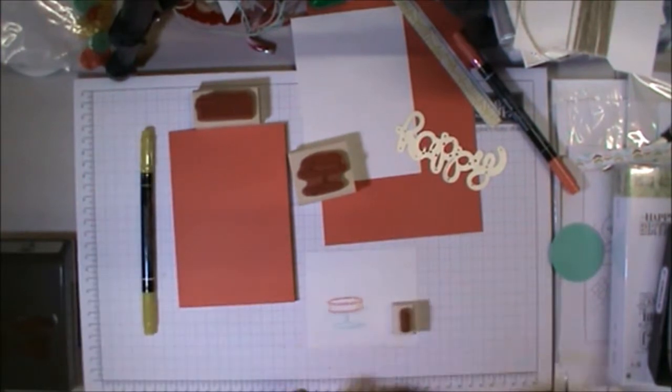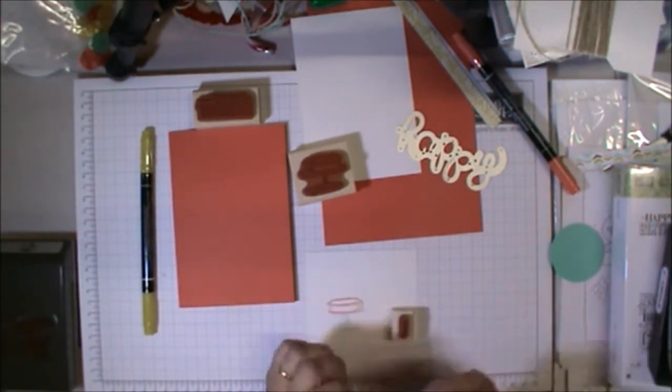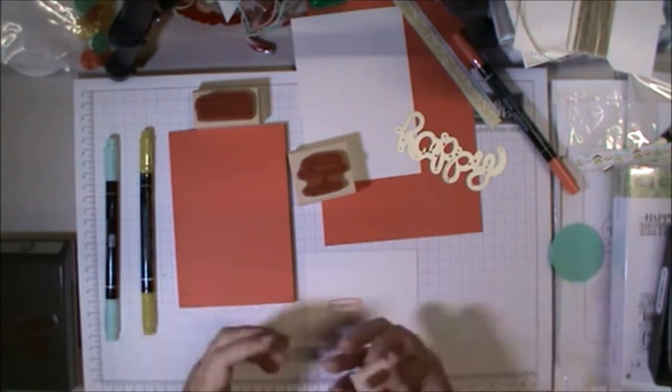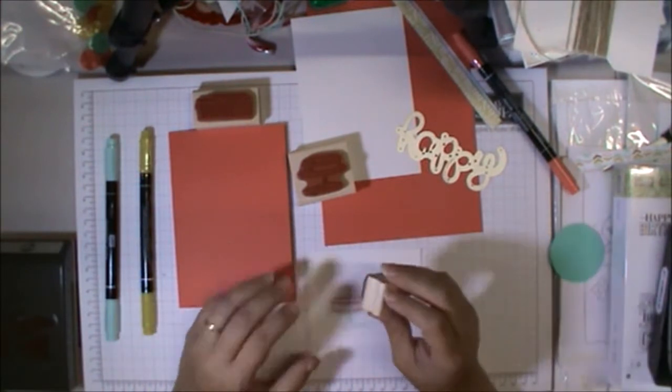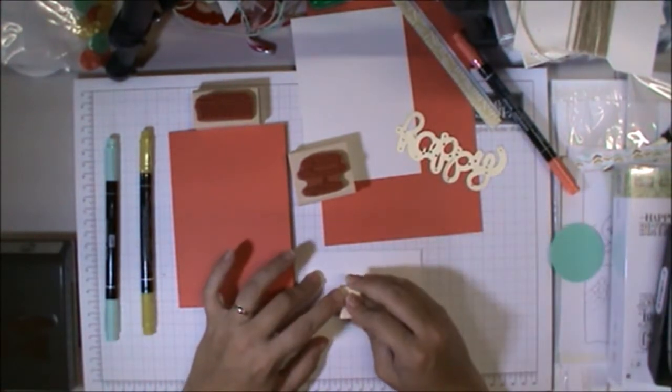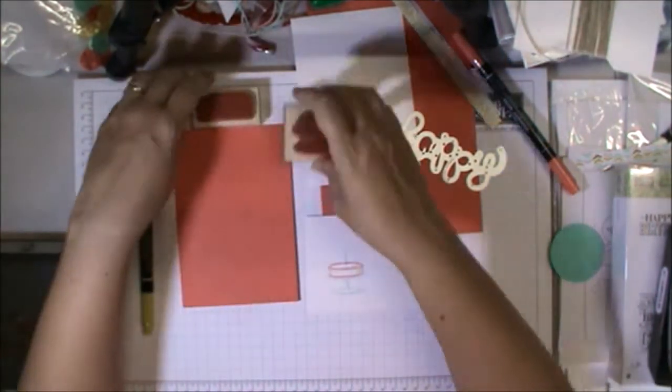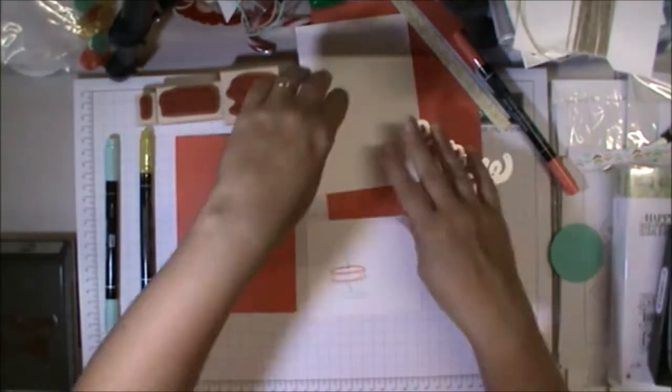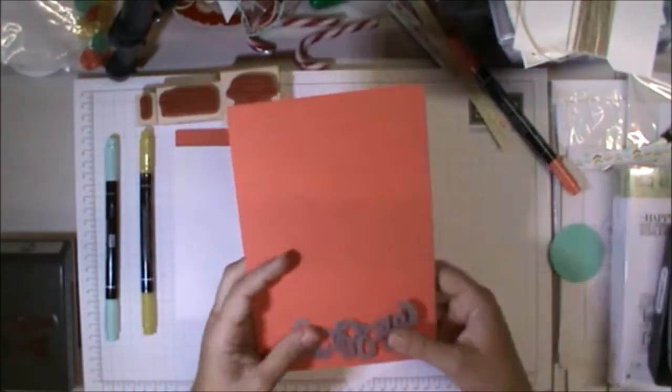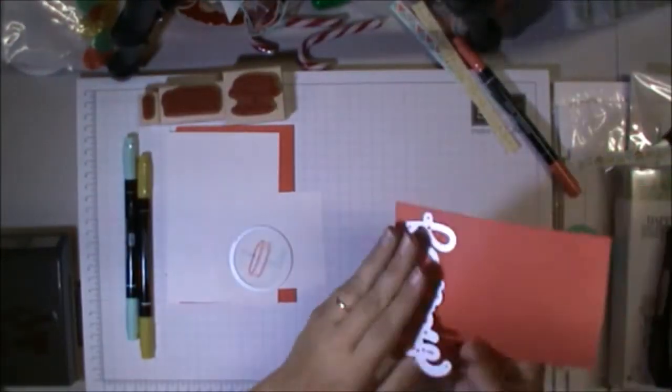I used Blushing Bride, Pool Party, and Calypso Coral. I just inked that up—it's quite quick to do. Just give it a little huff before you stamp it and it'll be fine.